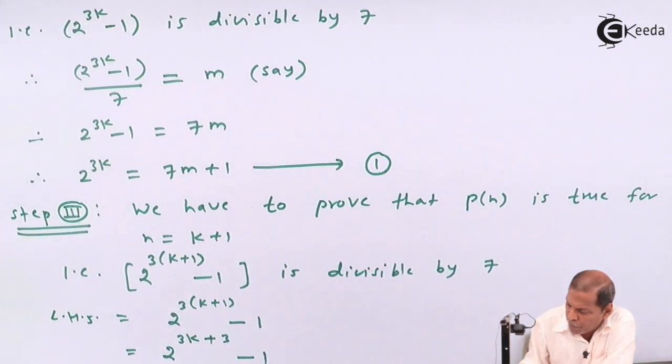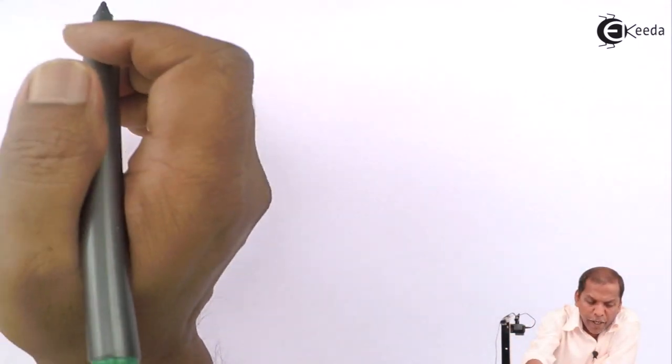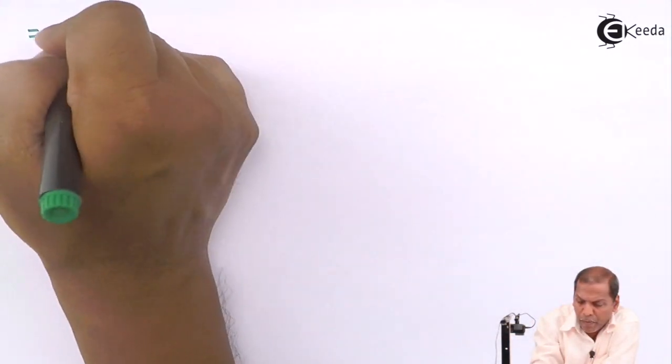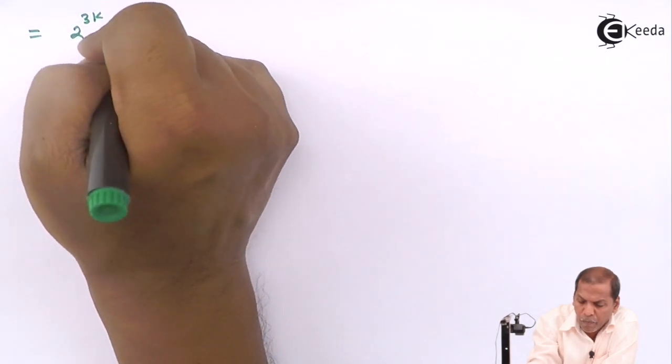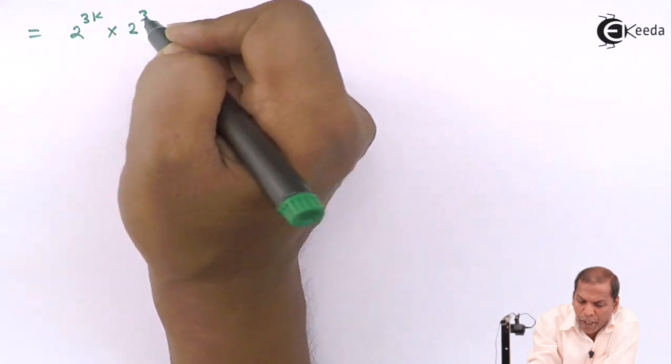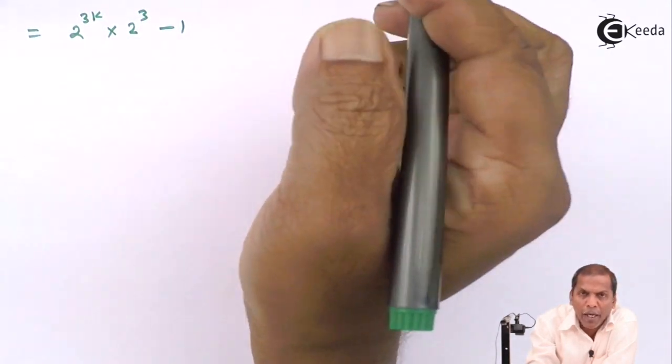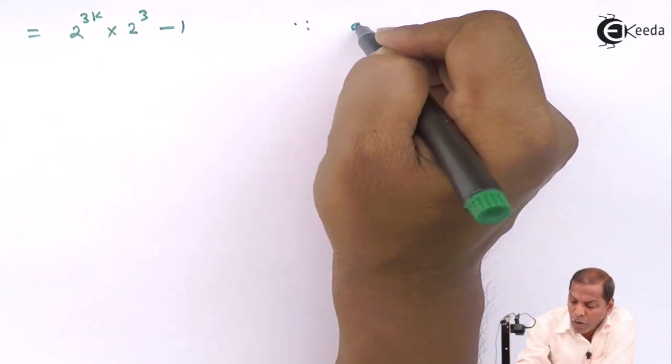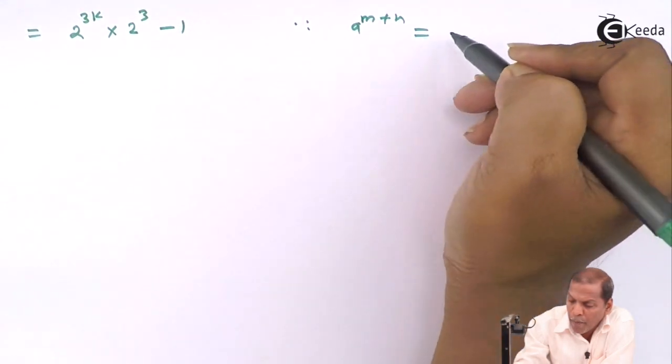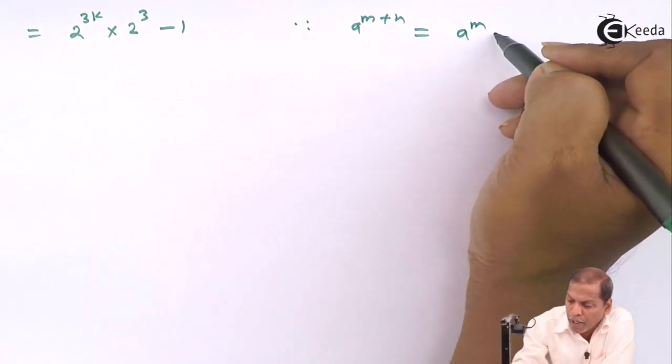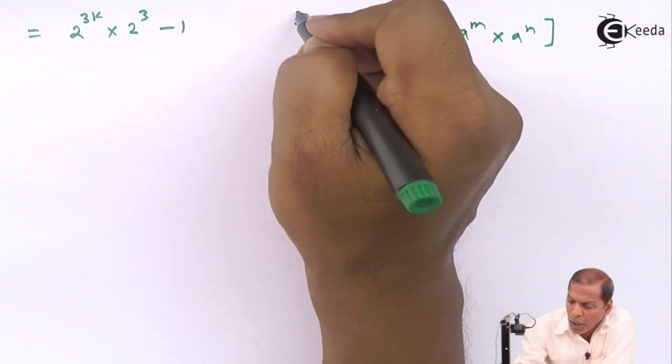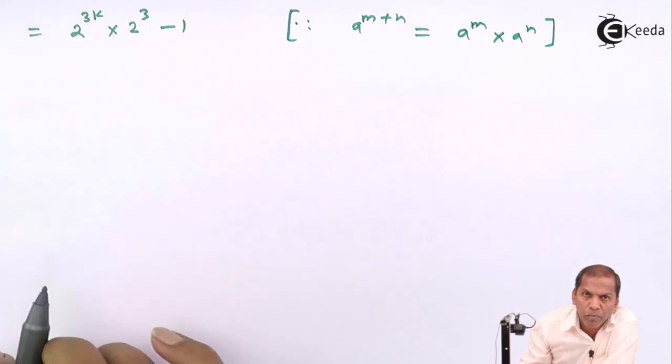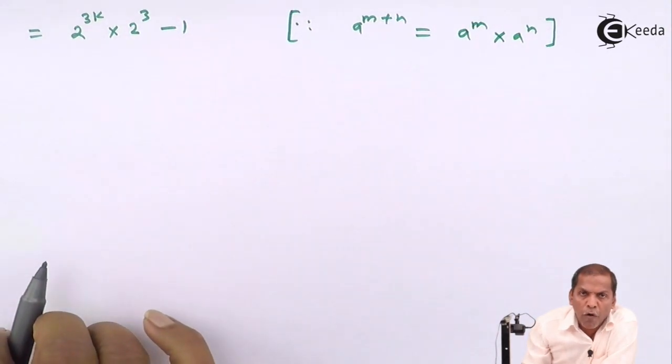Then minus 1 we write as is. On further simplifying we get 2 raised to 3k into 2 raised to 3 minus 1, since a raised to m plus n can be written as a raised to m into a raised to n by using law of indices.